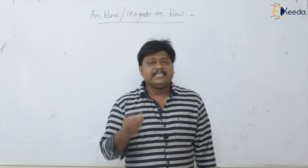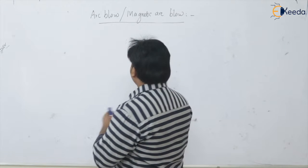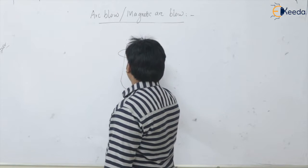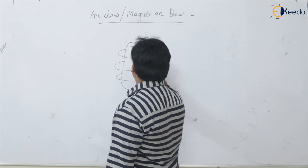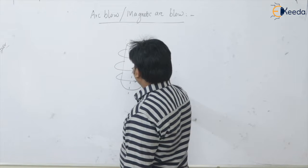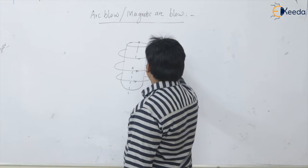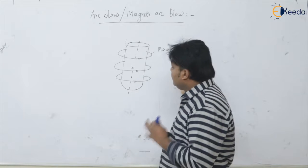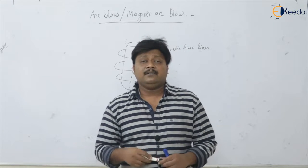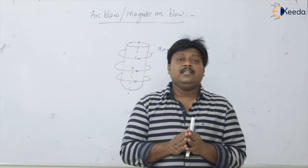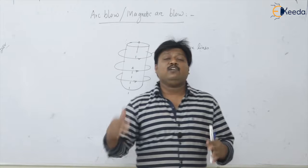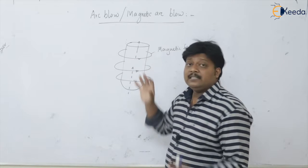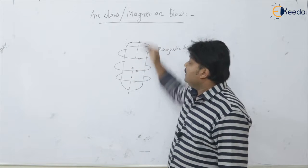If you take any electrical conductor, it is always surrounded with magnetic flux lines. These magnetic flux lines move with the movement of the conductor. One important thing is that these magnetic flux lines can only move through the material or conductor, but they cannot move into the air.